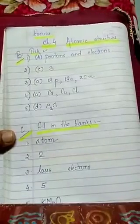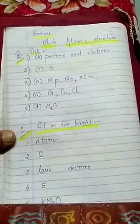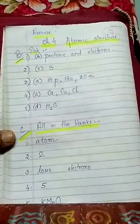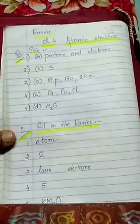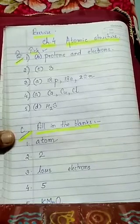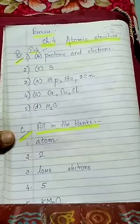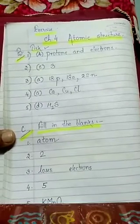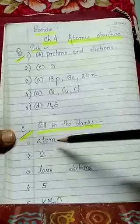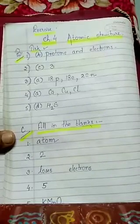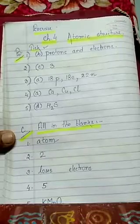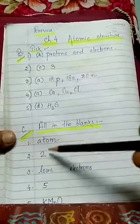Now move to the next section: fill in the blank spaces in the following statements. First one: according to Dalton, the smallest particle of matter that takes part in a reaction is an atom. Second, the atomicity of hydrogen chloride molecule is 2.